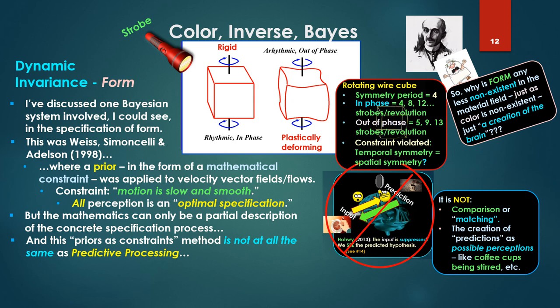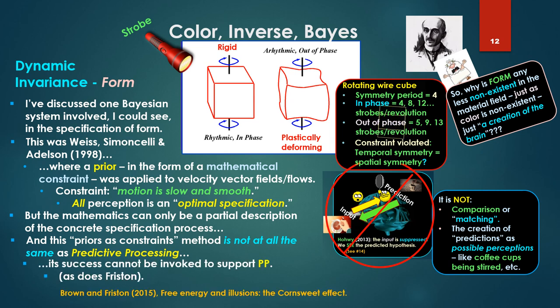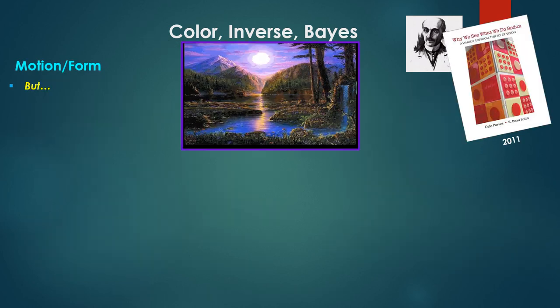It does not look like this. It is not a comparison or a comparator or a matching process. It's not the creation of predictions as possible perceptions like coffee cups being stirred that were then projected downwards. That was not the same case at all. So its success cannot be invoked to support predictive processing as Fristin there in that article being noted there, free energy and illusions, the cornsweet effect.